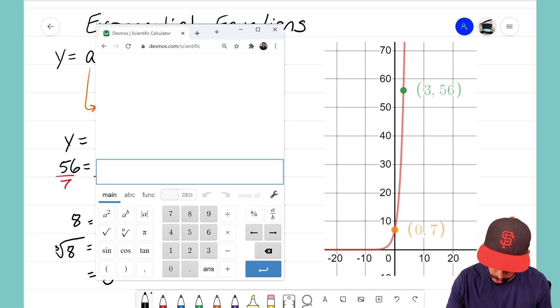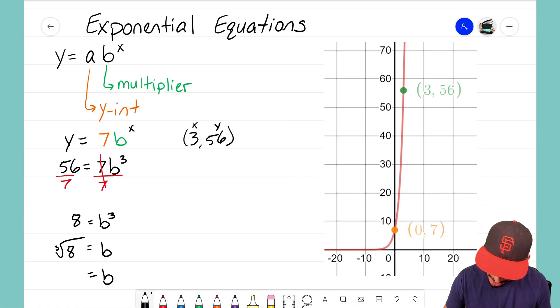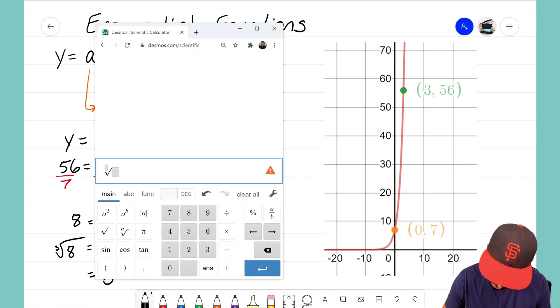The n root button is going to allow us to change what type of root we want - we don't want a square root, we want a cube root. So I can go ahead and click on that button and then I can make my way over to where the root power is and I'm going to change that base to be a value of 3.